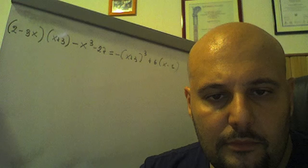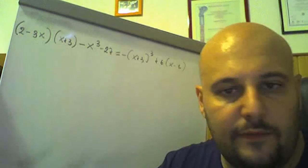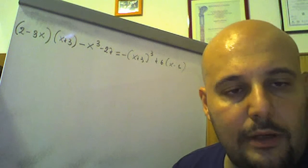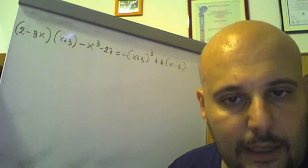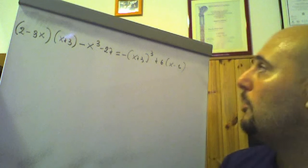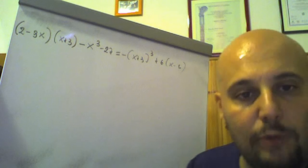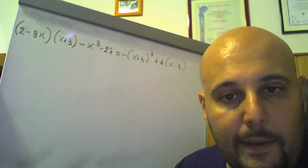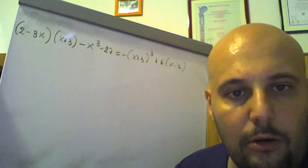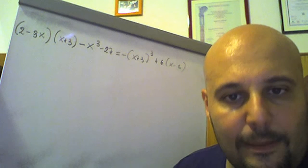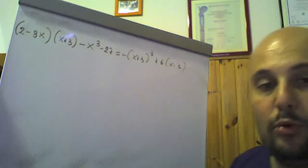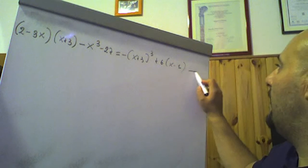Let's continue with another exercise: (2 − 9x)(x + 3) − x³ − 27 = −(x + 3)³ + 6(x − 1).